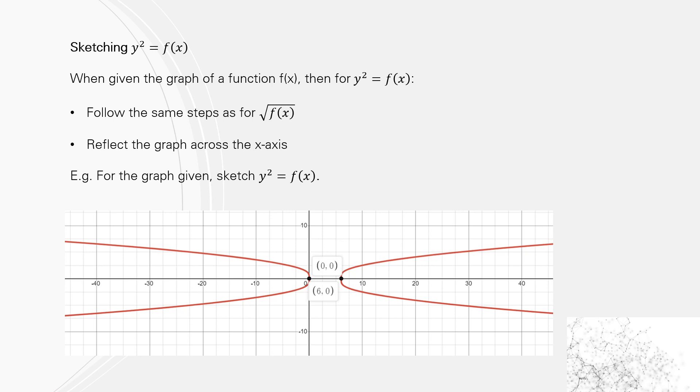So we get sideways parabolas, one has a vertex at (0, 0), and the other has a vertex at (6, 0).